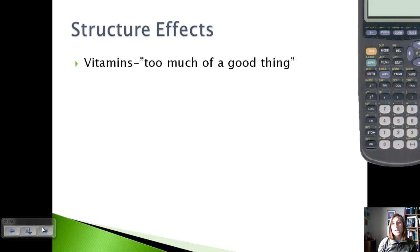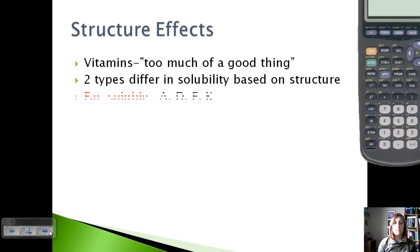So the first one is structure. And to talk about structure, we're going to look at vitamins. Sometimes you can have too much of a good thing with vitamins, and that's due to the fact that there are two main types. They differ in solubility based on their structure. So the first type is fat-soluble, and some examples of that are vitamin A, D, E, and K.